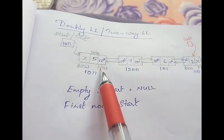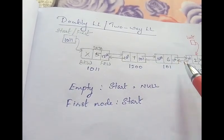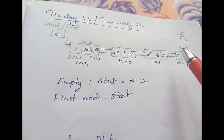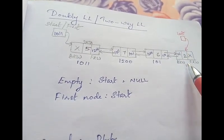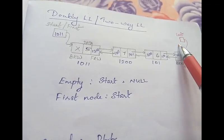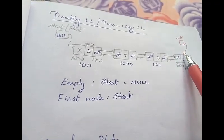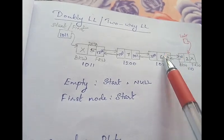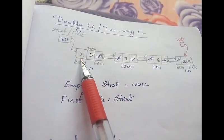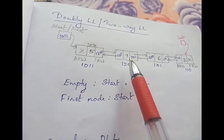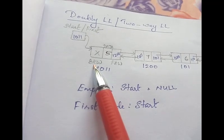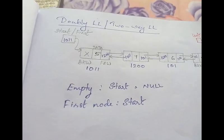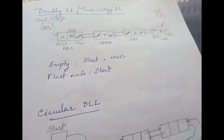To traverse in the forward direction, we start with the first node and use the forward pointer to go to the next node. To traverse in reverse, if we have a 'last' pointer pointing to the last node, we start there and use the backward pointers to traverse in the reverse direction. Each node contains: the data part, the forward link (address of the next node), and the backward link (address of the previous node).